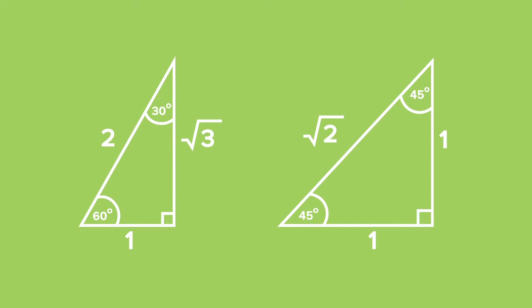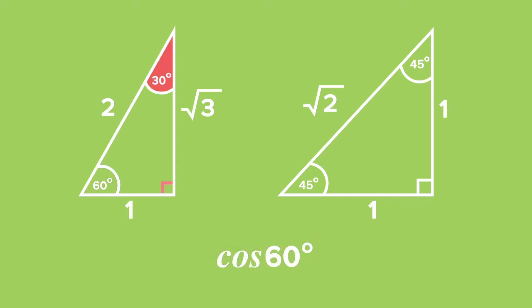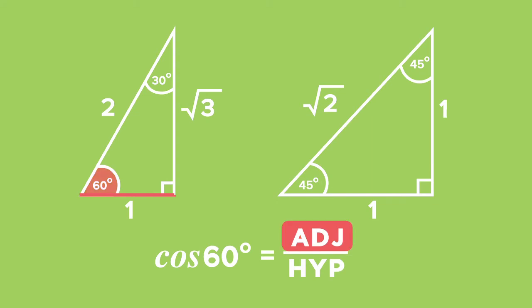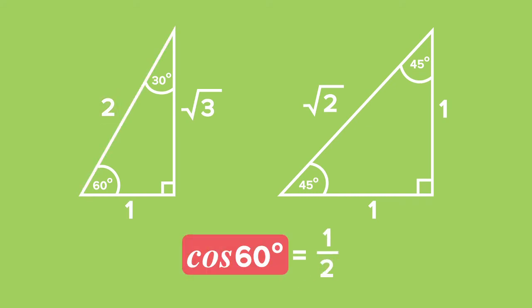If we want to work out the value of cos of 60 degrees but there's no calculator at hand, or the question asks us to solve it without a calculator, we simply use the 60, 30, and 90 degree triangle. The cos of 60 degrees is equal to the adjacent over the hypotenuse. The adjacent side of the angle 60 degrees has a value of 1, and the hypotenuse has a value of 2. Therefore, cos of 60 degrees is equal to a half.